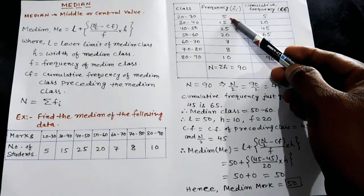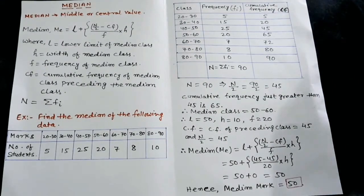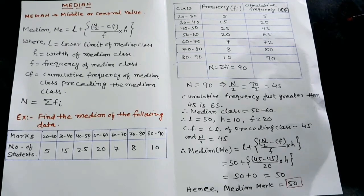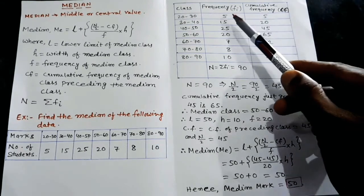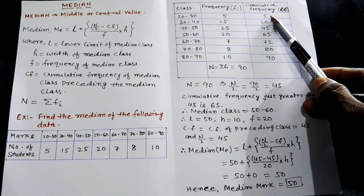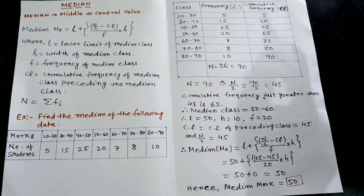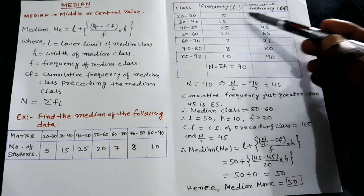For class 20–30, frequency is 5, so its CF is also 5. We can find CF using the less-than type method. The first CF is 5. For the second class, we add the first CF to the second frequency: 5 + 15 = 20.